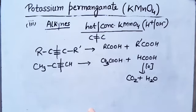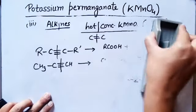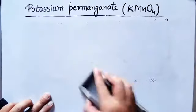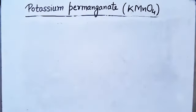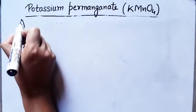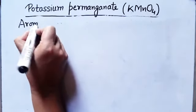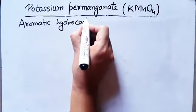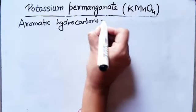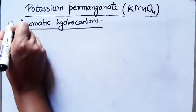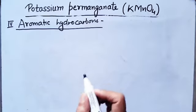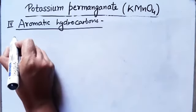So that was all about the reactions of alkynes with potassium permanganate. Now we will take the case of aromatic hydrocarbons. In aromatic hydrocarbons, we will take all cases one by one — saturated and unsaturated groups on the phenyl ring.